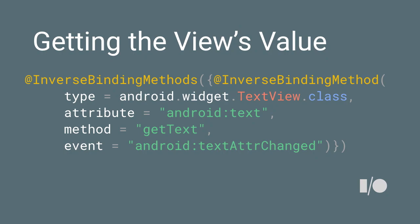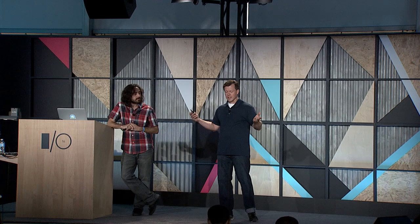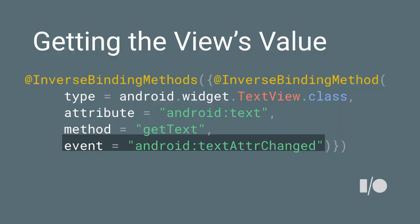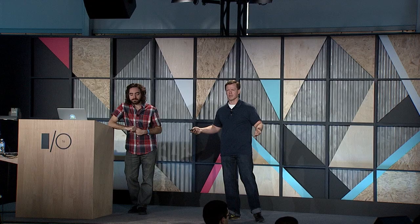To get the field's value, we create an @InverseBindingAdapter annotation that gives you a getter for your view. For a TextView type, we want to know the getter for android:text. We declare it as getText. But if you don't supply it, there's a default — it just uses the attribute name. So even if we didn't supply anything, it would use getText because the field attribute is android:text. We also have a synthetic attribute for the event that notifies when there's been a change in the view, and again there's a default: android:textAttrChanged.